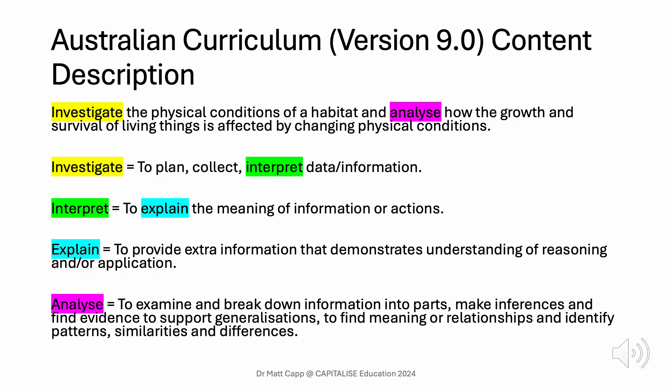Now let's come back to the Australian Curriculum Version 9 content description from Year 6 Science. Students investigate the physical conditions of a habitat and analyse how the growth and survival of living things is affected by changing physical conditions. Once again we define all the cognitive verbs and key terminology to ensure that the content descriptions being taught are accessible for all learners.